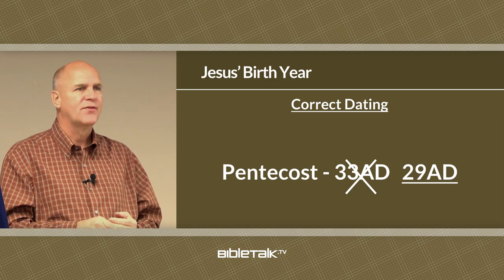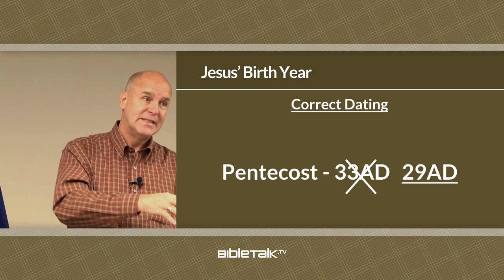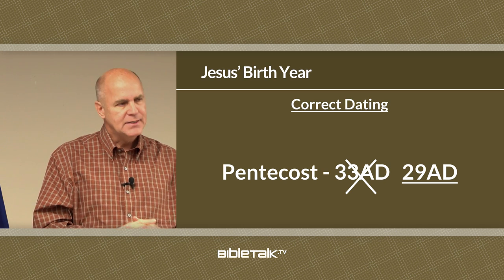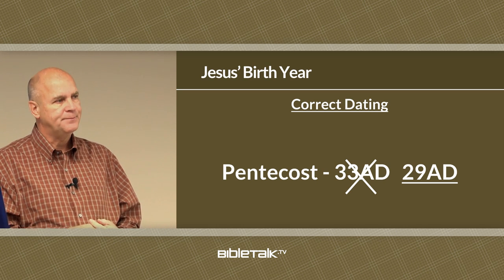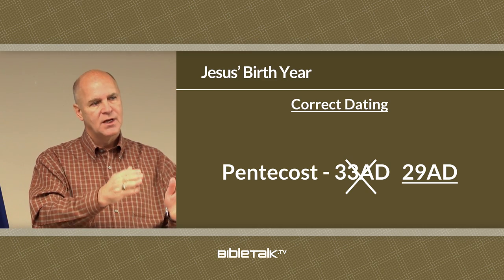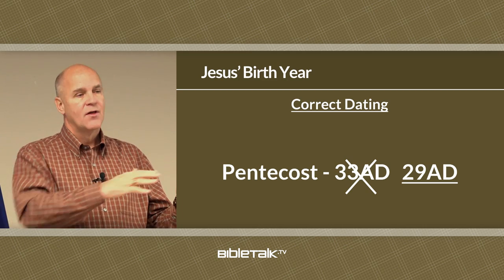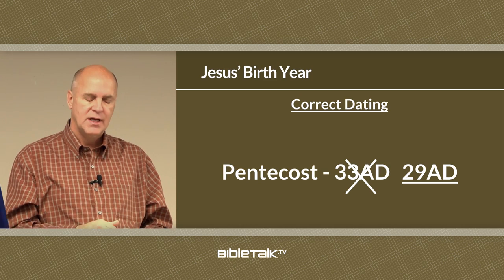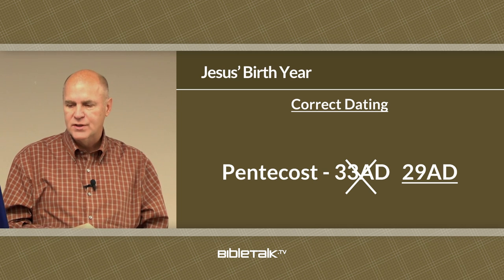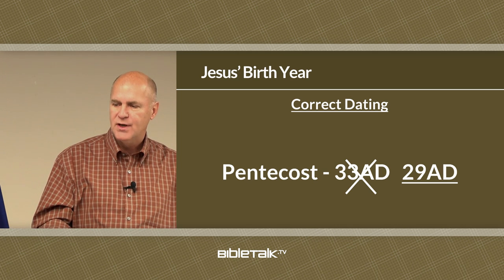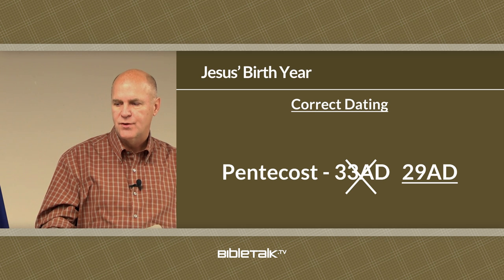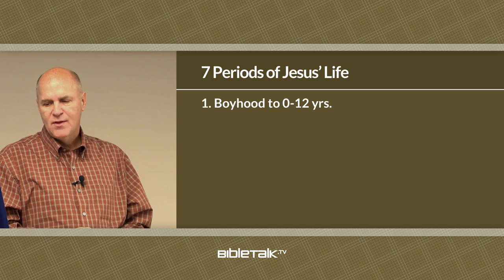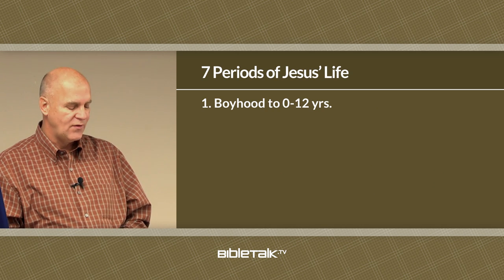Now let's talk about the seven periods of Jesus's life. We're going to break those seven periods down into individual events starting in our next lesson, but for today we're going to look simply at the seven periods. Period number one would be the boyhood of Jesus, from zero to twelve years. These include incidents and prophecies that led to His birth, and the limited information we have about His childhood.